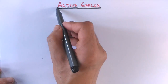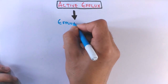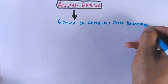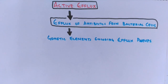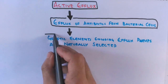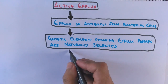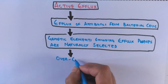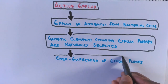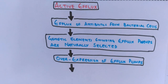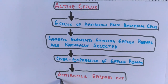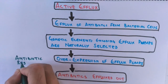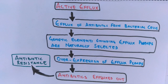The last mechanism is active efflux. In active efflux, toxins, foreign materials, and drugs are eliminated out of the bacterial cell. When antibiotics are present in the environment, the genes encoding efflux pump proteins are naturally selected over time, giving the bacteria an advantage. There is then overexpression of efflux pump proteins, and with more pumps in the cell, there is greater efflux of antibiotics, allowing the bacterial cell to survive. This also aids antibiotic resistance.